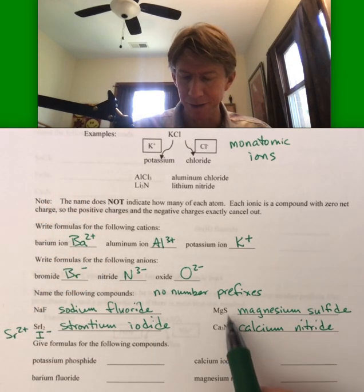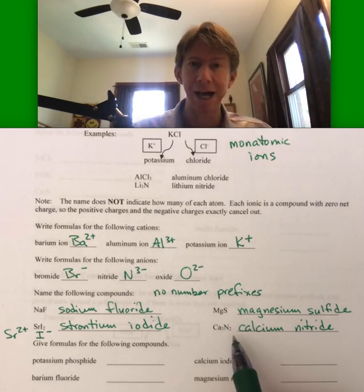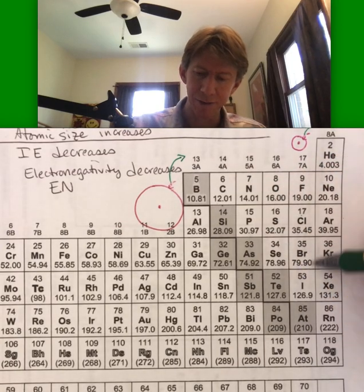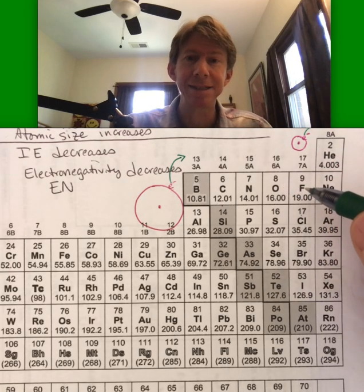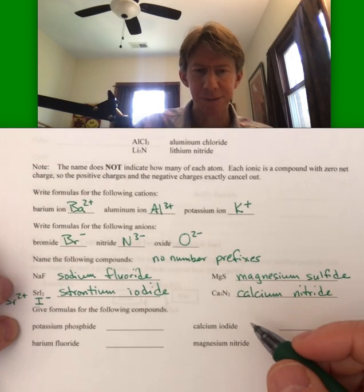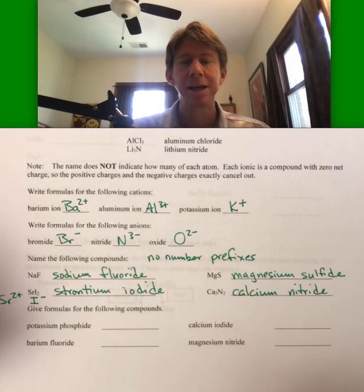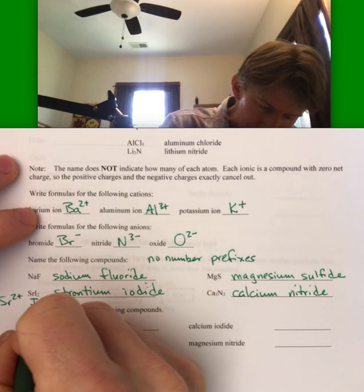All of the anions we're dealing with so far are going to be nonmetals. Nonmetals are going to be in this area of the periodic table up here, and they're going to have -ide endings. Now, working backwards — meaning we have the name and we're trying to get the formula — I like to take this in a couple of steps. Potassium, which is K plus, and phosphide comes from phosphorus.